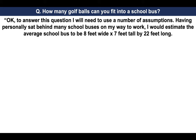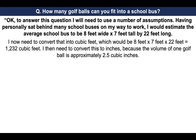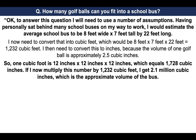To answer this question, I will need to use a number of assumptions. Having personally sat behind many school buses on my way to work, I would estimate the average school bus to be 8 feet wide by 7 feet tall by 22 feet long. I now need to convert that into cubic feet — 8 by 7 by 22 — which equals 1,232 cubic feet. I then need to convert this into inches because the volume of one golf ball is approximately 2.5 cubic inches. One cubic foot is 12 by 12 by 12 inches, which equals 1,728 cubic inches. If I multiply this by 1,232 cubic feet, I get 2.1 million cubic inches, which is the approximate volume of the bus.